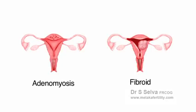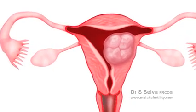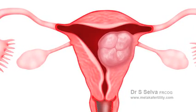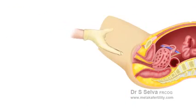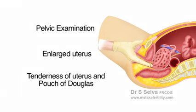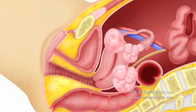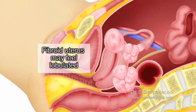Adenomyosis is often confused with fibroids. Both adenomyosis and fibroids cause enlargement of the uterus. However, fibroids usually do not cause pain during menstruation. In adenomyosis, pelvic examination may reveal an enlarged uterus and tenderness of the uterus and the pouch of Douglas. The uterus is usually uniformly enlarged in adenomyosis, whereas in fibroids the uterus may feel lobulated.